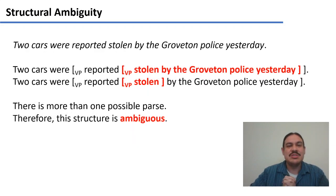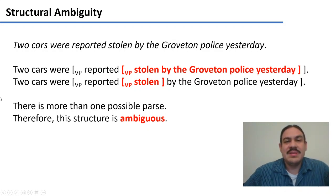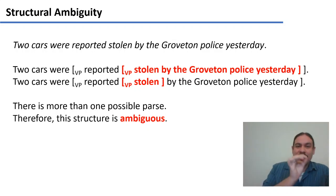For example, in the sentence two cars were reported stolen by the Groveton police yesterday, where does the constituent by the Groveton police yesterday go? Does it belong to the verb stolen, so that the cars were stolen by the police? Or does the constituent by the Groveton police belong to reported? Because there's more than one way to parse this sentence, there's the potential for an ambiguity. So we could have an ambiguous parsing where it could go in one direction or the other.